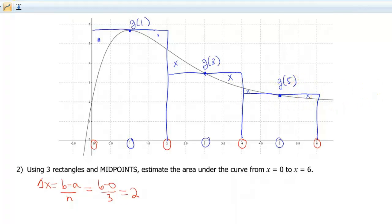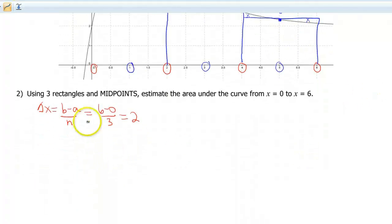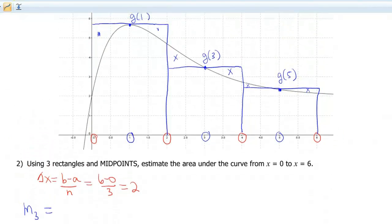All right, so anyway, we're going to calculate this the exact same way. So our m sub 3 is going to be, we're going to do g of 1 times 2, and then we're going to do g of 3 times 2, and then we're going to do g of 5 times 2. Because again, this is the height of our rectangle times the width of our rectangle. So that's the nice thing about doing these is we're really just doing a lot of geometry. We're just multiplying lengths and widths together.